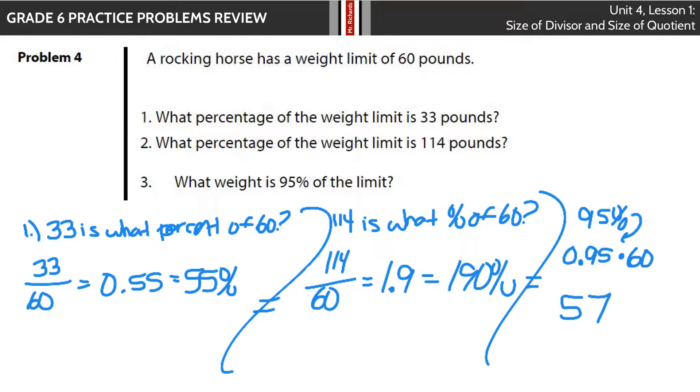A rocking horse has a weight limit of 60 pounds. What percentage of the weight limit is 33 pounds? We're getting into some review questions now. Basically, we're saying 33 is what percent of 60? If I take 33 and divide it by 60, I get 0.55. Move that decimal two times to the right and you'll end up with 55%.